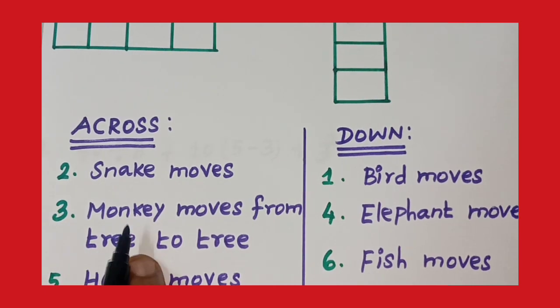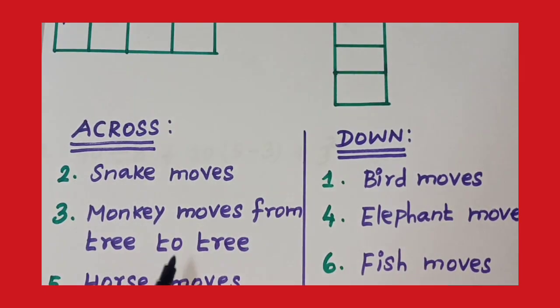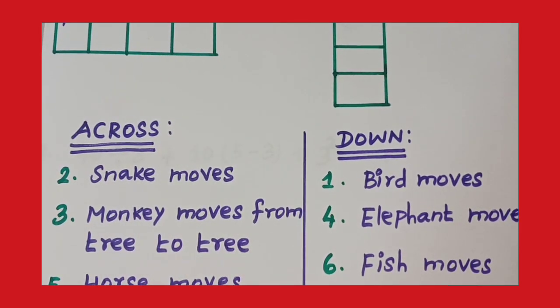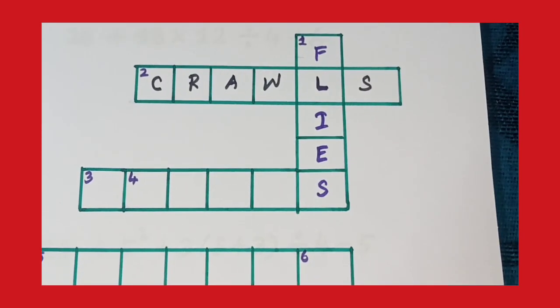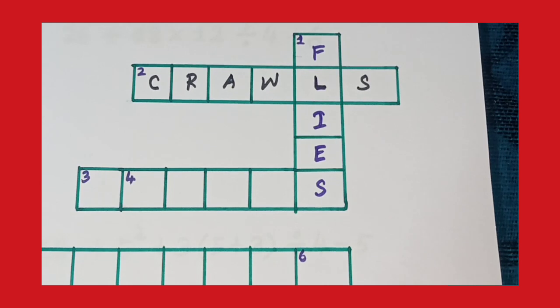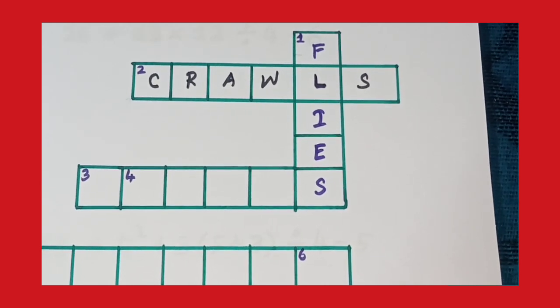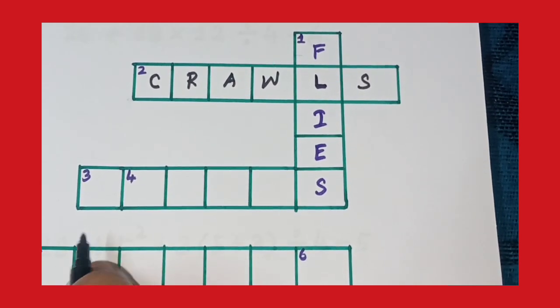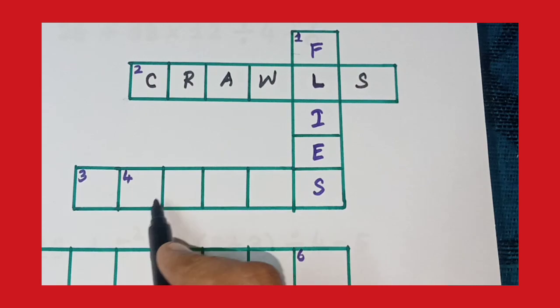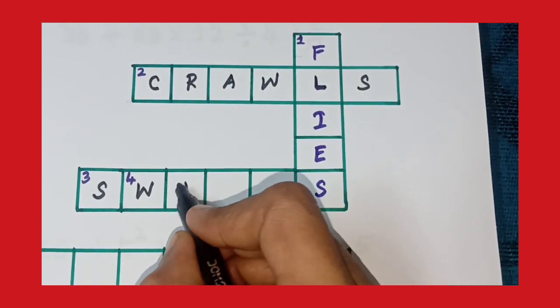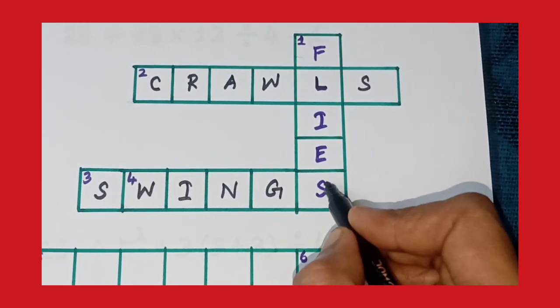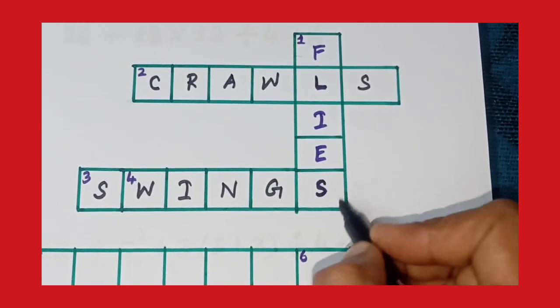Third one, monkey moves from tree to tree. The clue is across. Monkey moves from tree to tree, swings. Yes. S-W-I-N-G-S. Swings.